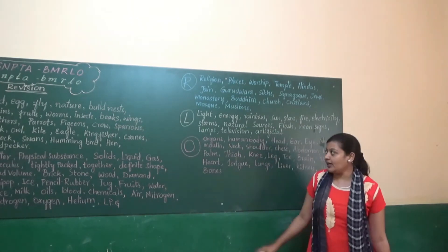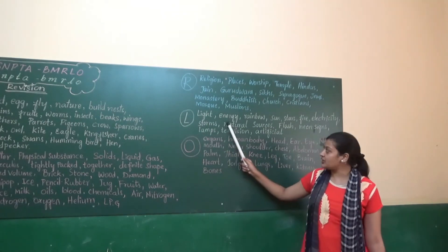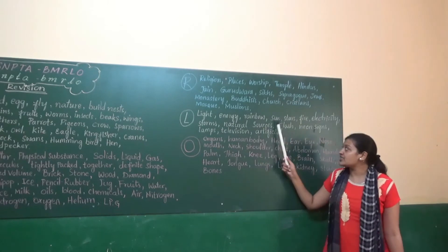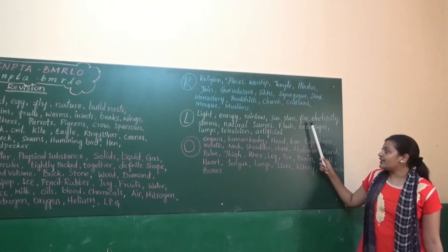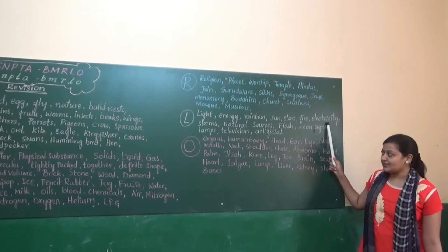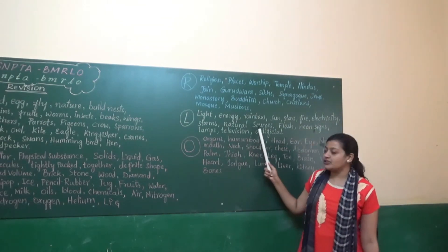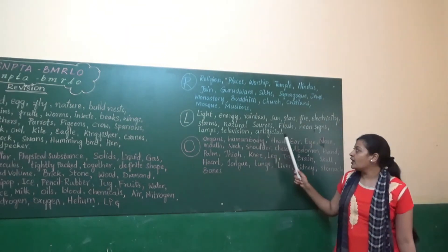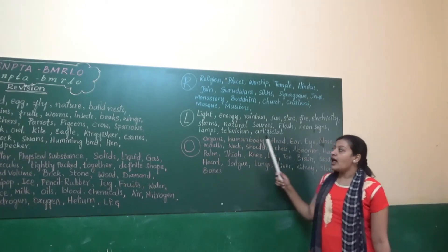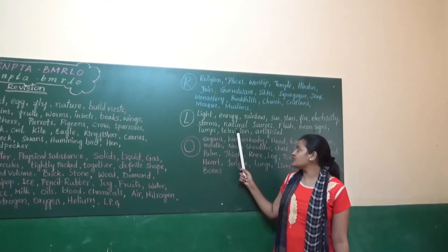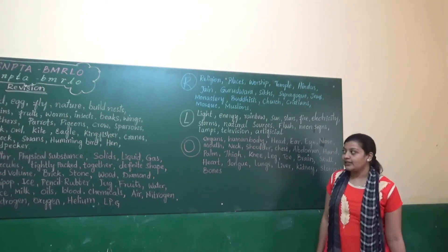Next we will see L — Light energy. Rainbow, sun, stars, fire, electricity, storms — natural sources. Flash, neon signs, lamps, television — artificial sources.